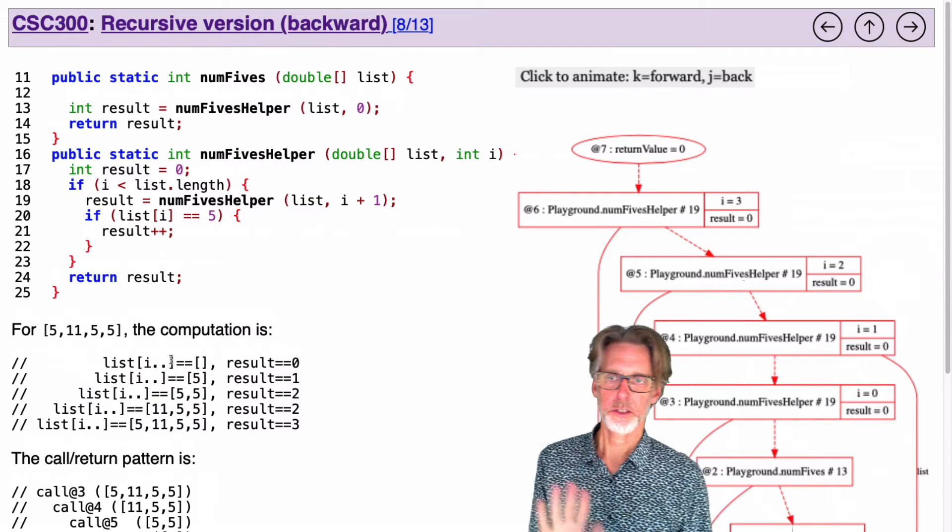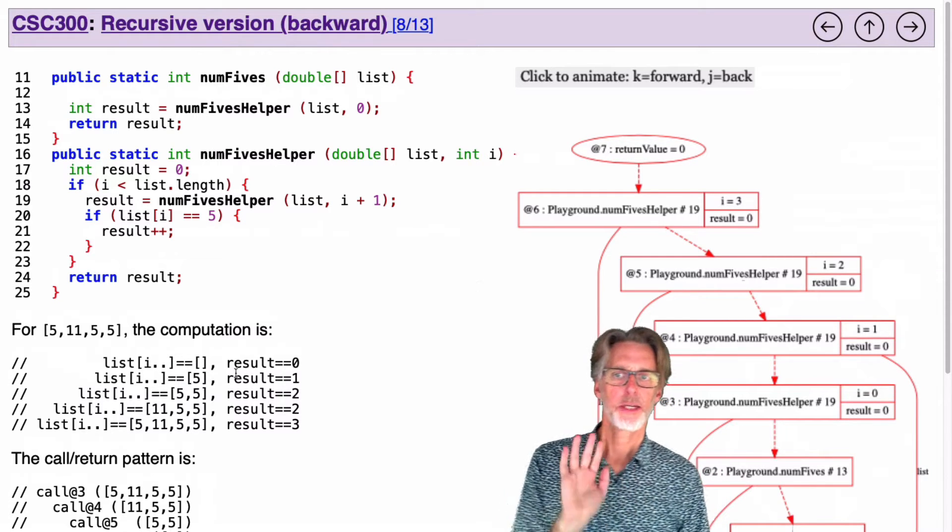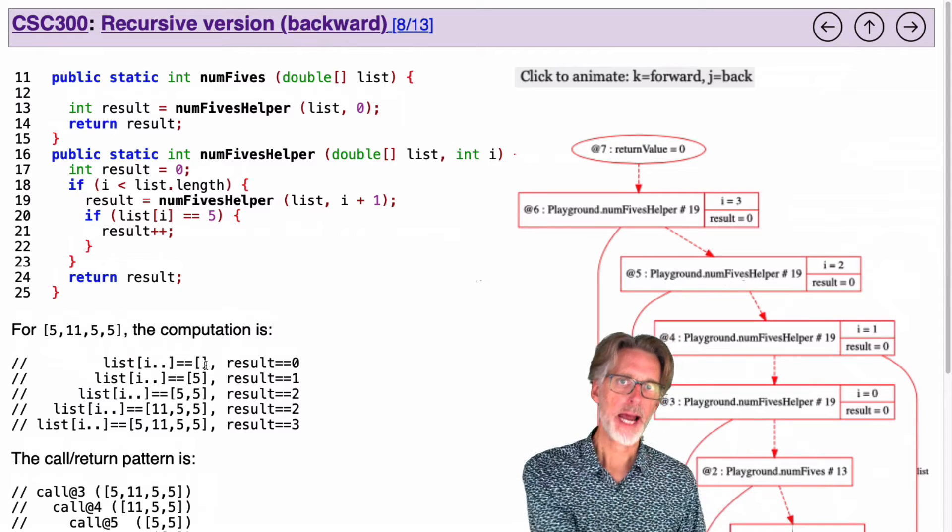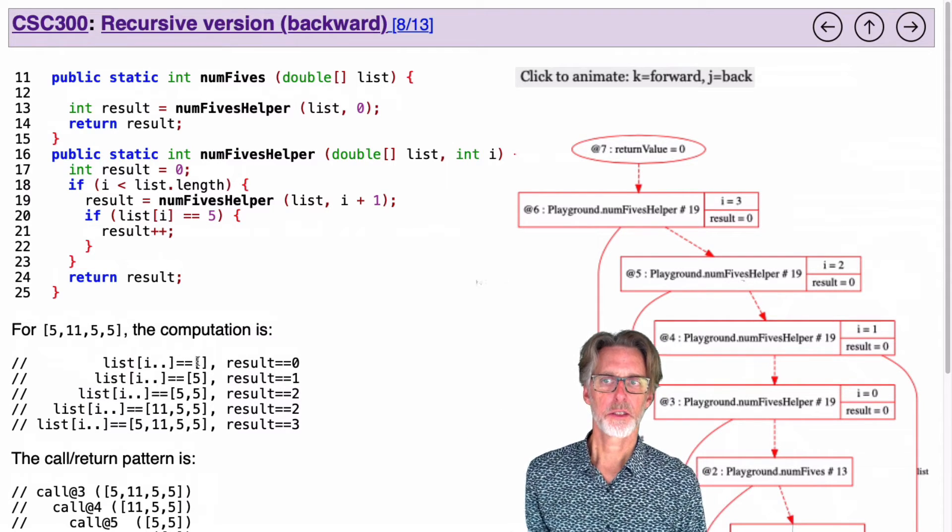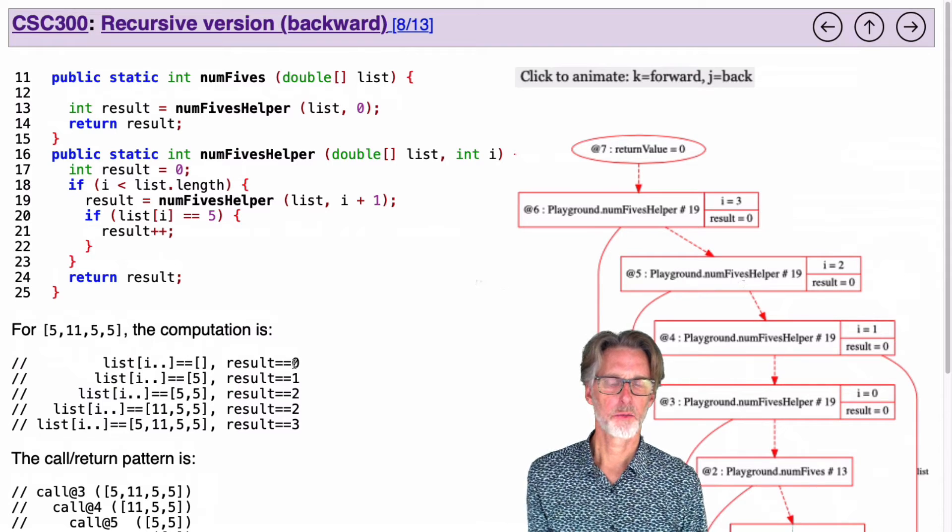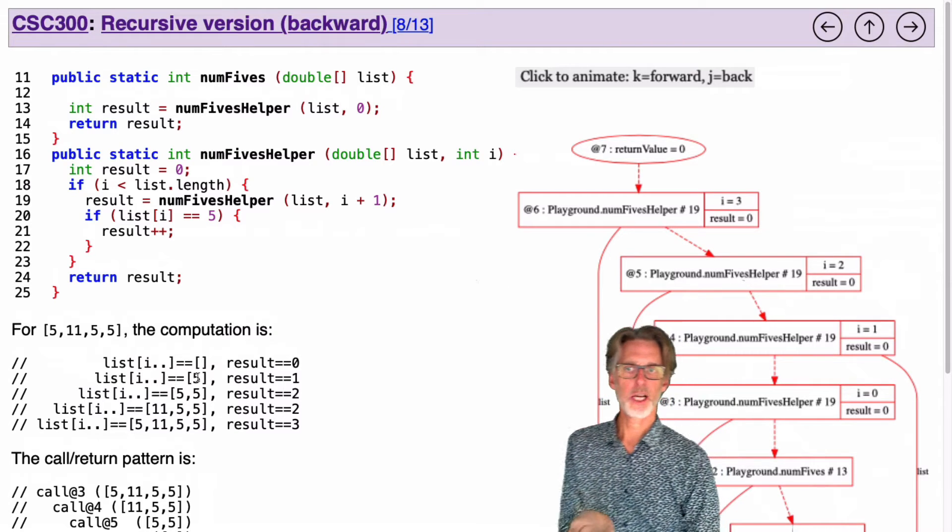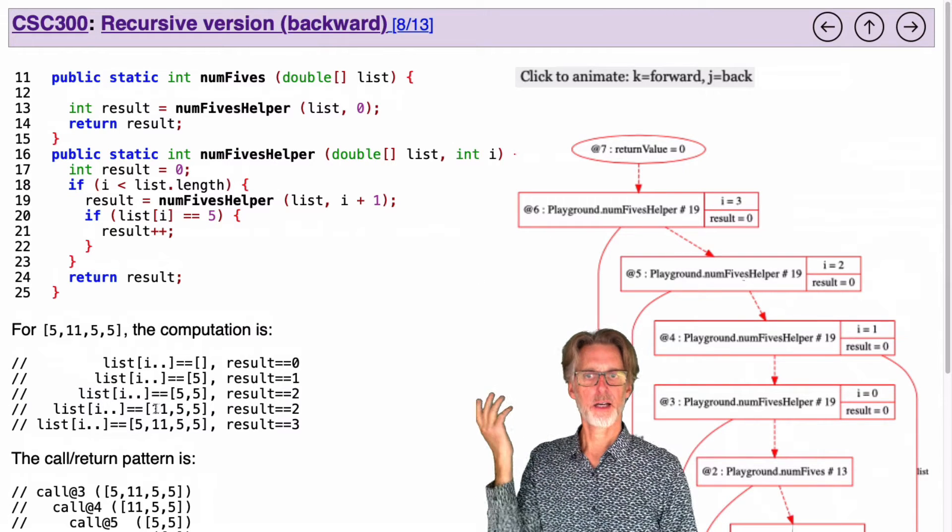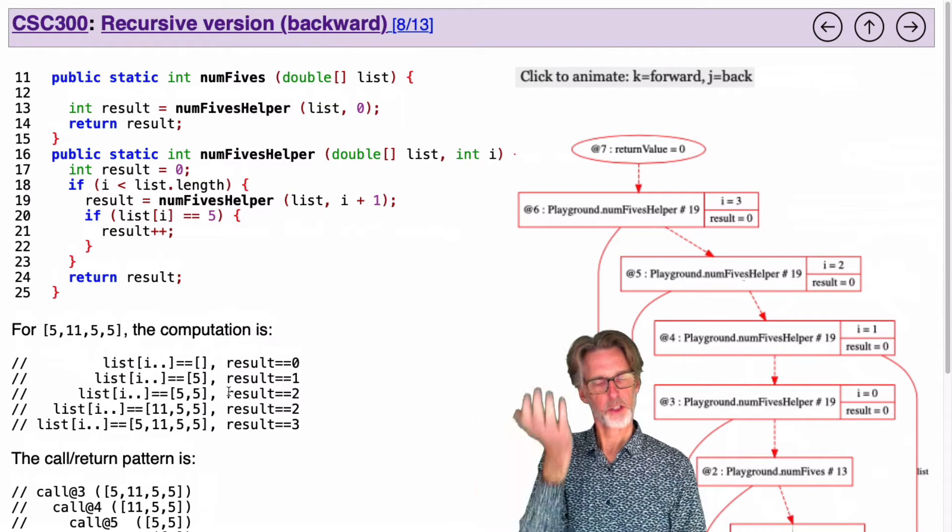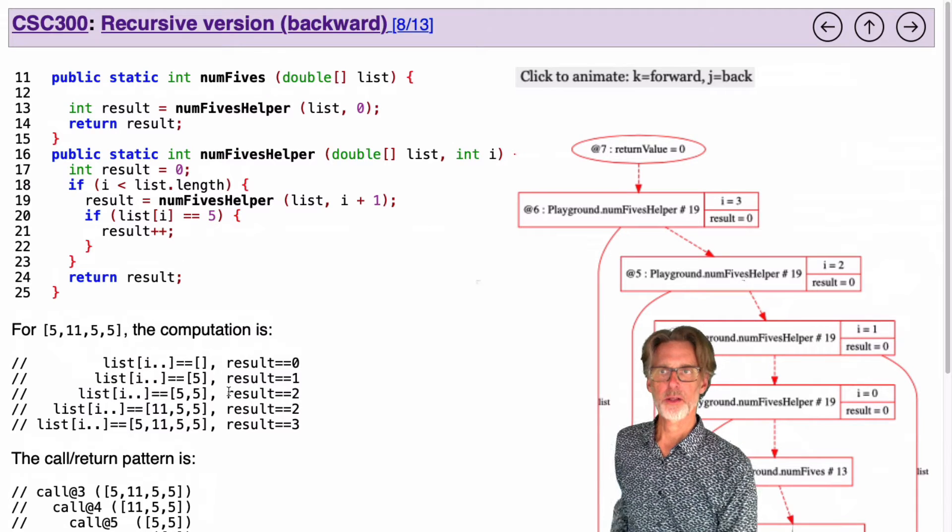If you think about it just abstractly, what I'm going to do is look at the list from the back to the front. So we'll start at the end of the list where it's empty and we'll see that it's zero, then looking at the last five we'll add in one, then the two fives too, then the 11 and back. So we're doing the computation going backwards rather than forwards.